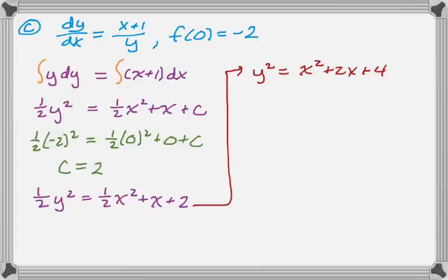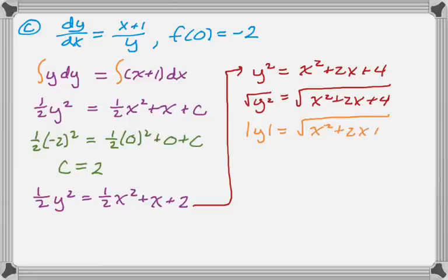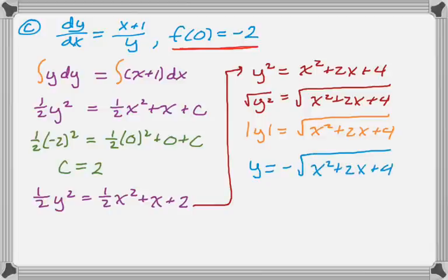Now what I need to do is I need to get y as a function of x. And to do that, I'm going to take the square root of both sides of this. Now this is a tricky little point that some people miss in algebra. Square root of y squared is the absolute value of y. So the absolute value of y equals square root of x squared plus 2x plus 4. And now this leads me to either y is positive that radical, or y is the negative of that radical. I'm going to look at the initial condition, which has a negative y value, which means I need to pick the negative square root.